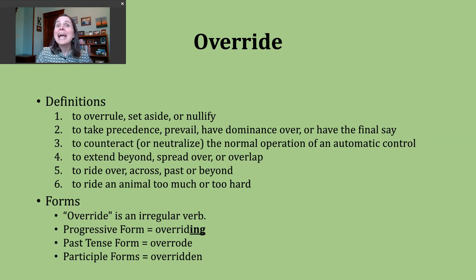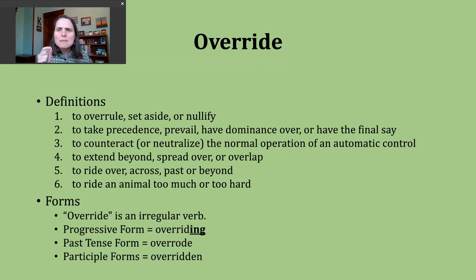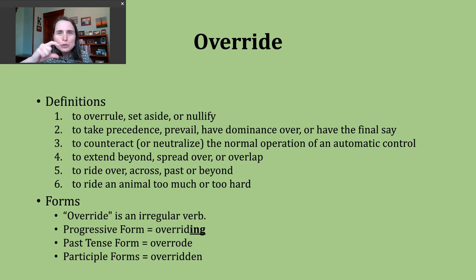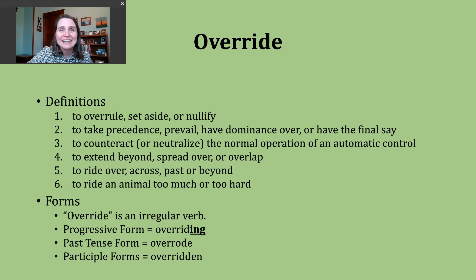A third way you might encounter the verb override can mean to counteract or neutralize the normal operation of an automatic control. Before I was an English teacher, I worked in the field of accounting and tax law, so I used a lot of computer programs to help produce tax returns. Sometimes there were special situations where we needed a certain thing to appear in a place and the software just wasn't designed or programmed to do that. So we would have to counteract, do certain things to make the form look like we knew it needed to be — going around that normal operation. In other words, we were overriding the software.